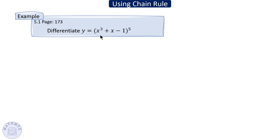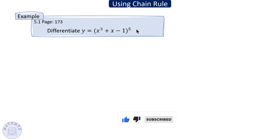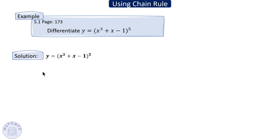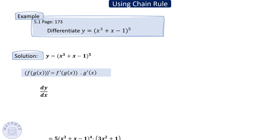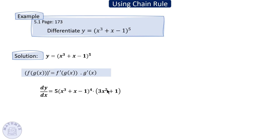Let's apply the chain rule. Here y equals a polynomial raised to power five. Think of it as: outside function is u to the power five, inside function is the polynomial. First, take the derivative of the outside function using the power rule: five u to the power four, or five times the expression to the power four, times the derivative of the inside function. The derivative of x cubed is 3x squared, plus the derivative of x is one.